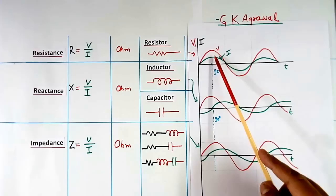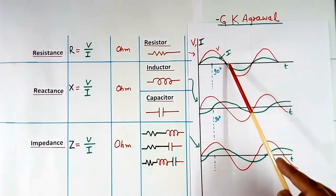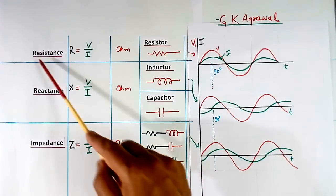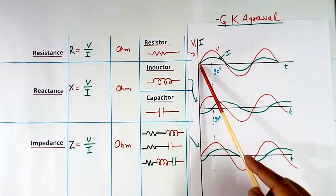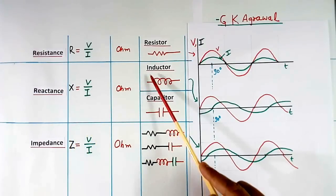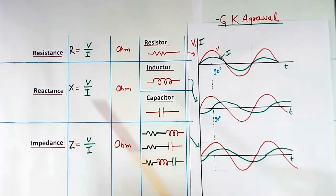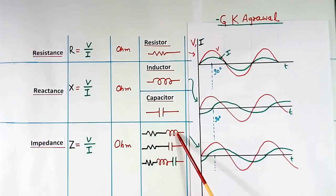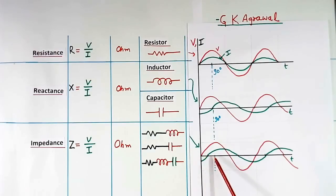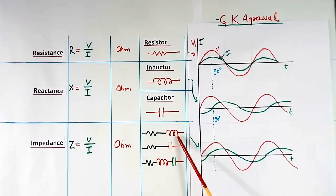These are voltage and current wave shapes. Red color is voltage and green color is current. In case of resistance, current and voltage both will be in the same phase. In case of inductive reactance, current will be 90 degrees lagging with respect to voltage. In case of impedance, if R and L are there, then current will be lagging anywhere from 0 to 90 degrees, depending upon the value of R and L.